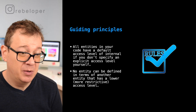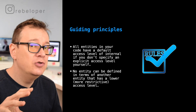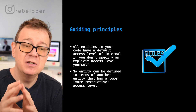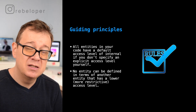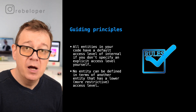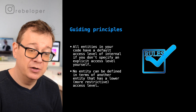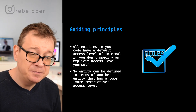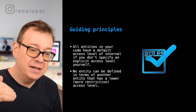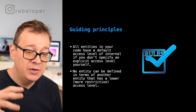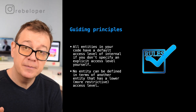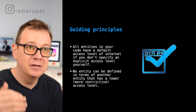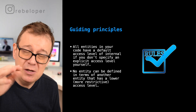Here are some guiding principles. All entities in your code have a default access level of internal if you don't specifically set an access level — so whenever you type func, class, or a variable, they are implicitly internal. The second rule is that no entity can be defined in terms of another entity that has a lower, more restrictive access level. So if you have set up a public class, you cannot have private functions inside it.